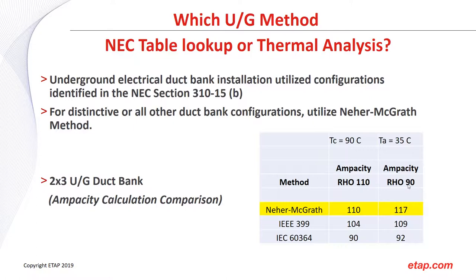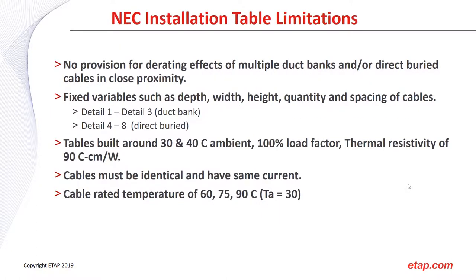This leads to the conclusion that both IEC and NEC installation tables provide some safety margin — which is a good thing. However, whenever we fall outside the table limitations, we need to perform a thermal analysis calculation. Key limitations include: no provision for rating effects of multiple duct banks and direct buried cables in close proximity, and fixed variables for depth, width, height, quantity, and spacing of cables.